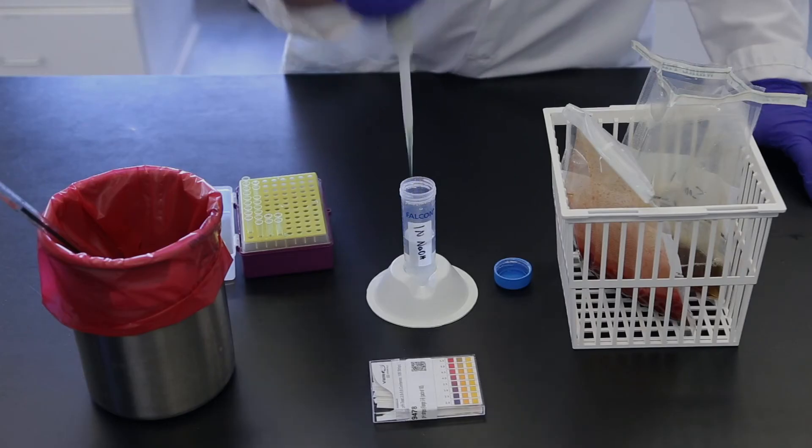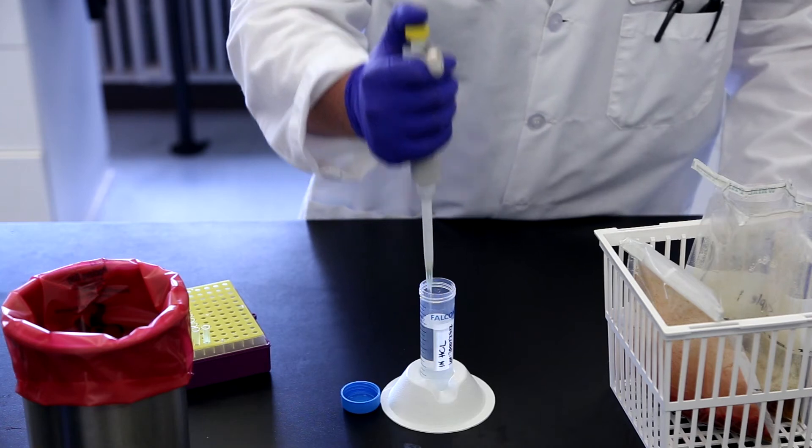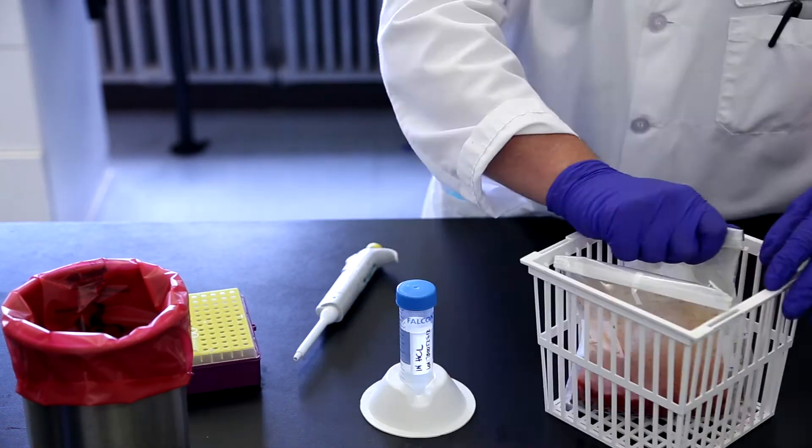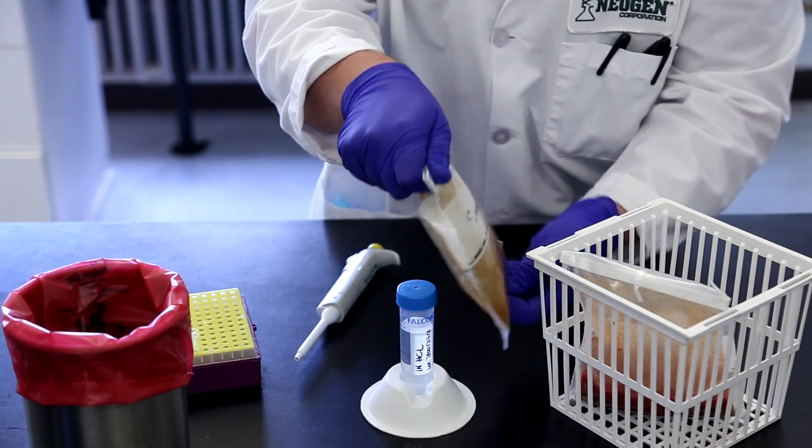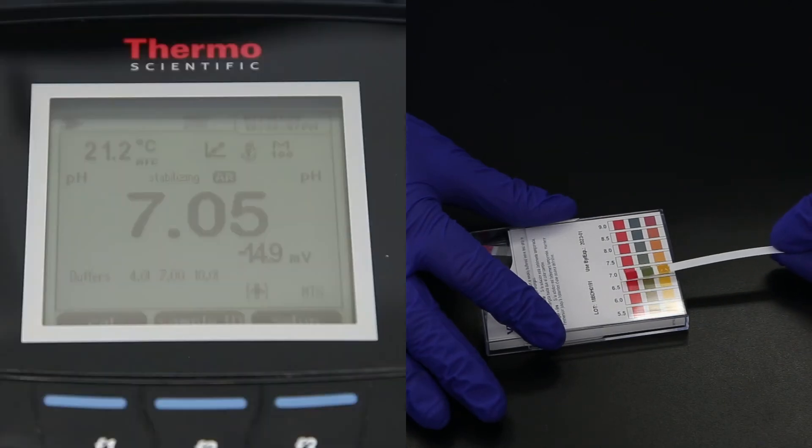Adjust a low pH with sterile NaOH. Adjust a high pH with sterile HCl. Homogenize the sample after each addition and repeat as necessary until you reach the target pH range.